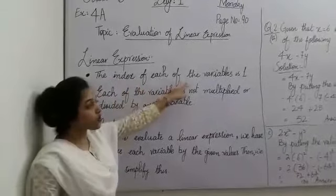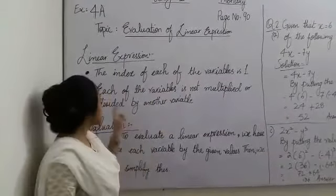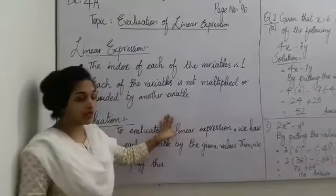First is the index of each of the variables in linear expression must be equal to 1. And the second is each of the variables is not multiplied or divided by another variable.